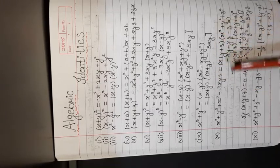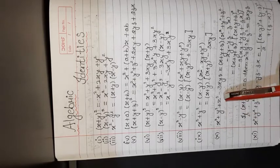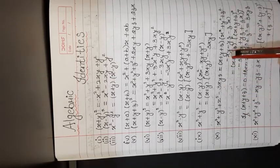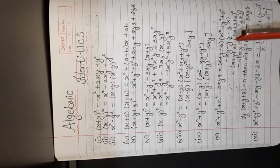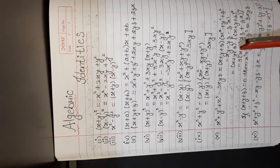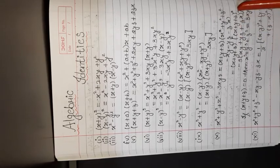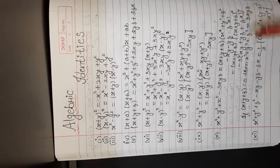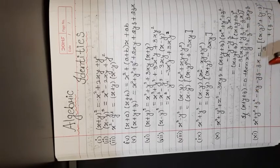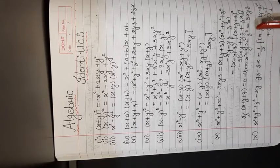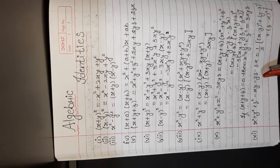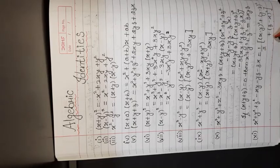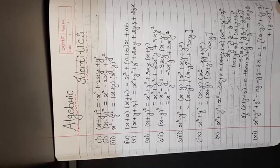Tenth, x³ + y³ + z³ − 3xyz = (x + y + z)(x² + y² + z² − xy − yz − zx). And last, x² + y² + z² − xy − yz − zx = ½[(x − y)² + (y − z)² + (z − x)²].